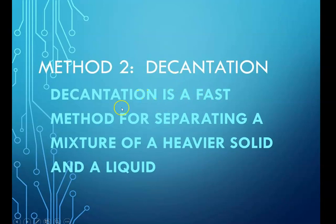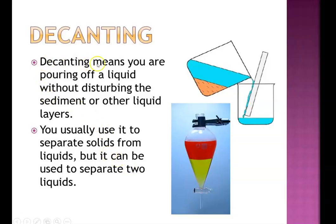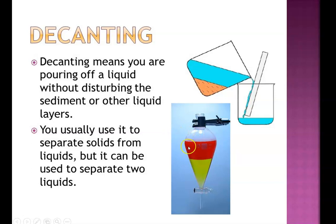Decantation is a fast method for separating a mixture of a heavier solid and a liquid. In decanting, we pour off a liquid without disturbing the sediments or other liquid layers. Decantation can be used in two ways: firstly, to remove an insoluble solid by slowly pouring the liquid into another container; and secondly, to separate two immiscible liquids by slowly pouring out the lighter liquid without disturbing the heavier liquid.